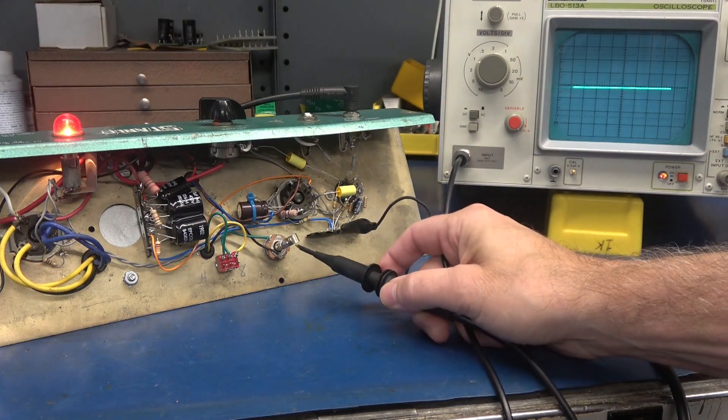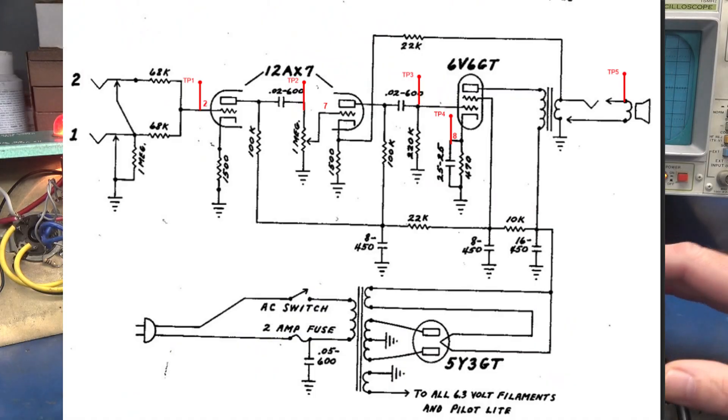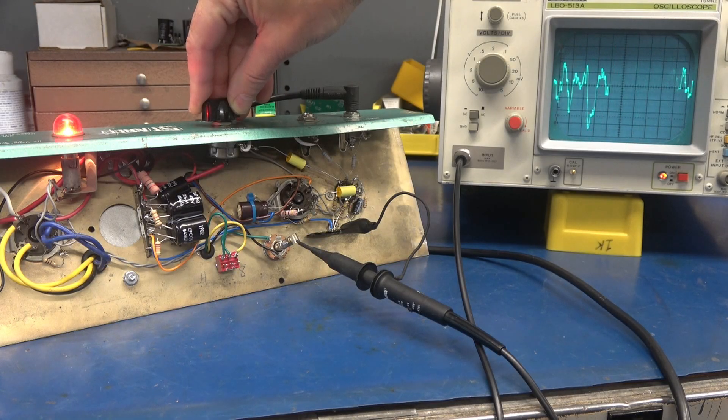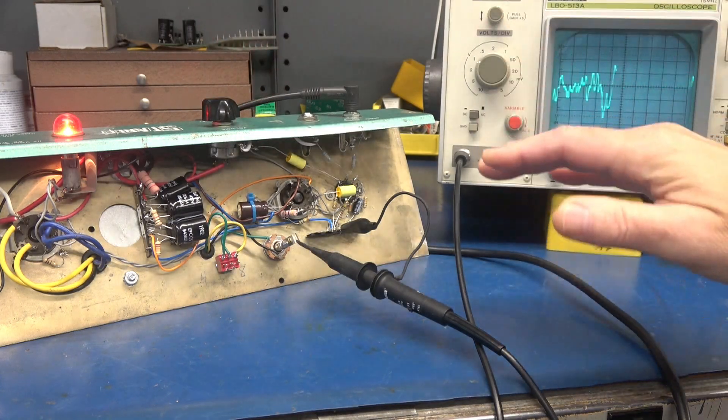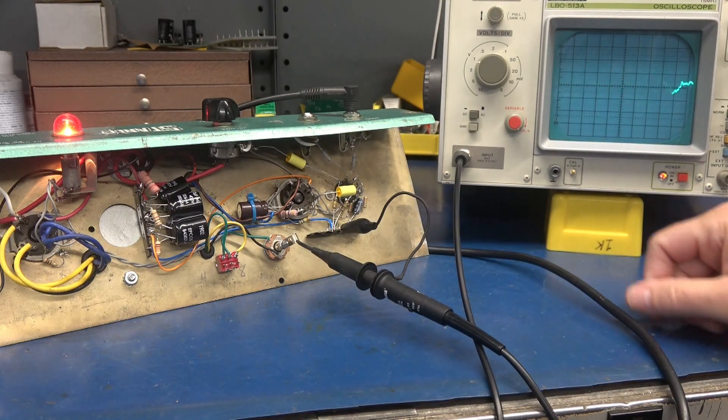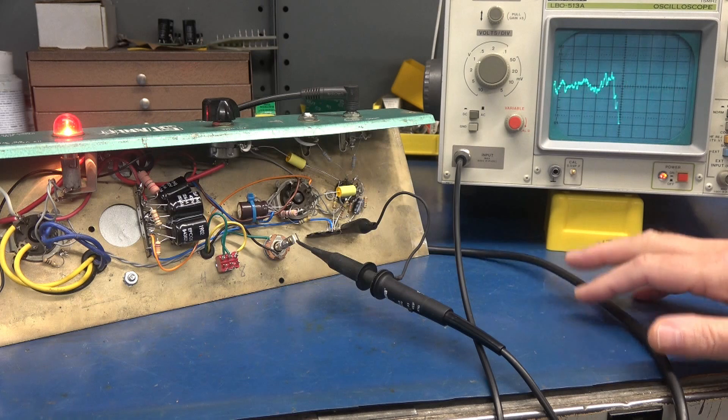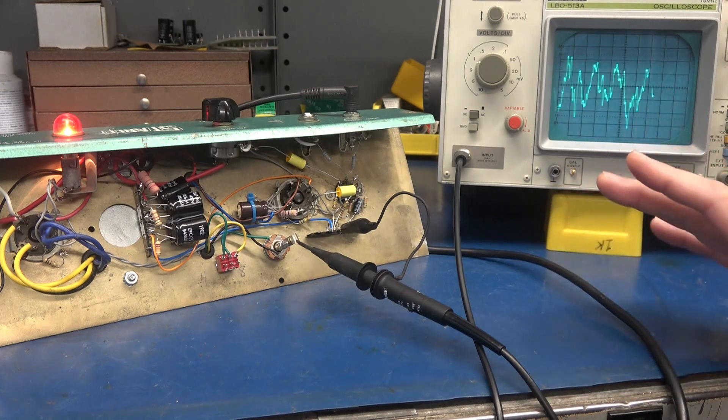All right, final test point is five. And that is right on the speaker jack itself. And you can see we had quite a bit of gain. I can actually turn that down with the volume control. So now that is verifying that our signal is getting through the secondary of the output transformer, which would feed your load. In this case, it's a dummy load, but it would be your speaker. In other words, this amp is working.